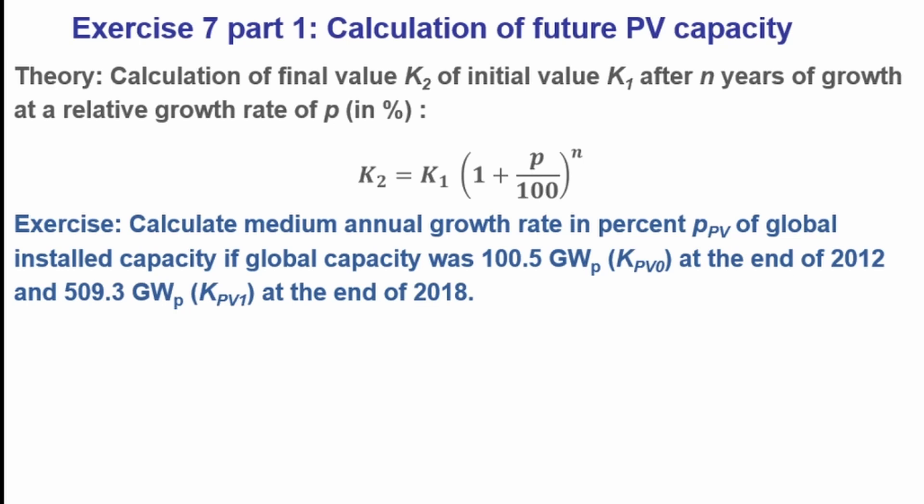Now we want to apply that to photovoltaics. We want to know the growth rate. We don't know it; we just have some values. We know that in the year 2012, the global PV capacity in the world was 105 gigawatt under standard test conditions. And in the year 2018, the installed peak capacity was 509.3 gigawatt.